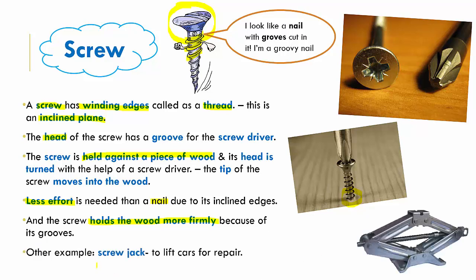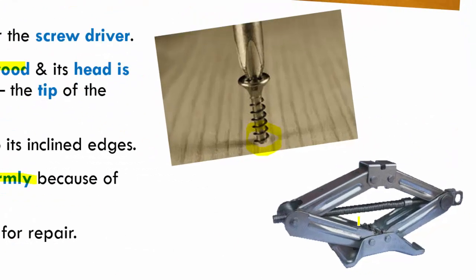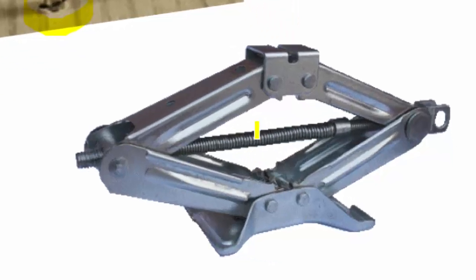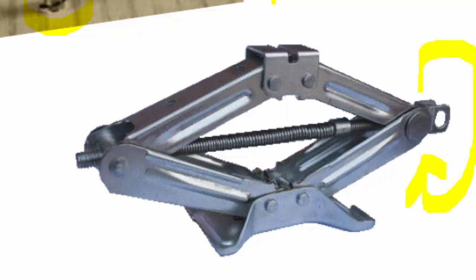Another example of a screw is the screw jack, which helps in lifting cars for repair. If you have a punctured tire, you place the screw jack under the car and turn it round and round — as you turn it, the screw jack becomes bigger and bigger, pushing the car upwards so you can easily remove and replace the punctured tire.